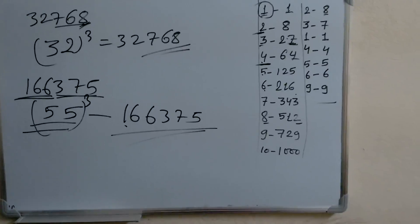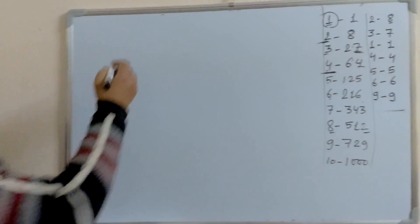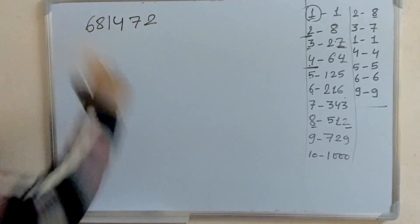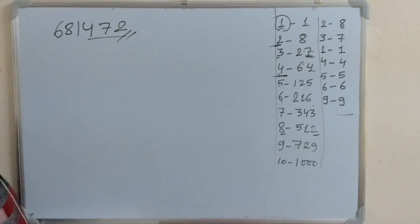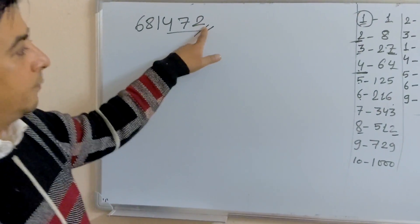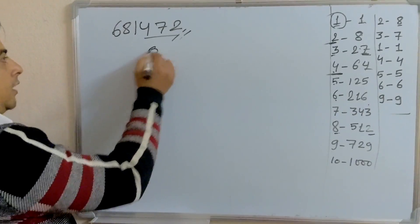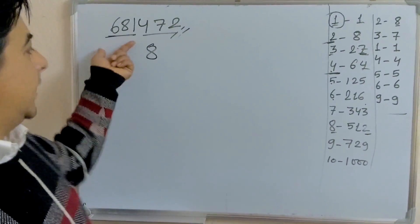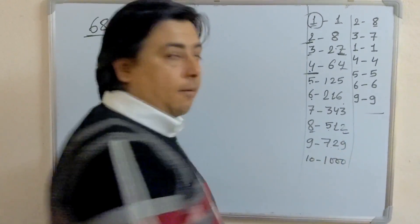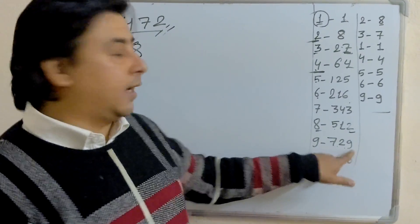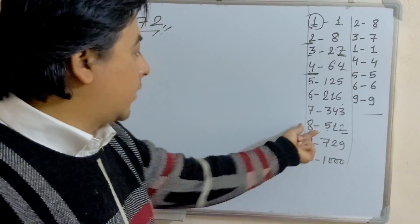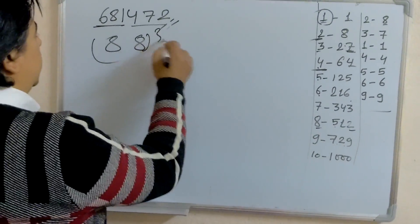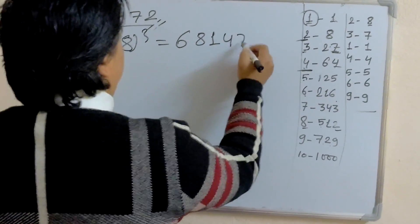Let's take the next example: 681472. Take the last 3 digits — 472. The last digit is 2, which corresponds to 8 cube, so write 8. The remaining number is 681, which lies between 512 and 729. We take the smallest one — 512 is 8 cubed, so write 8. Therefore, 88 cubed equals 681472.